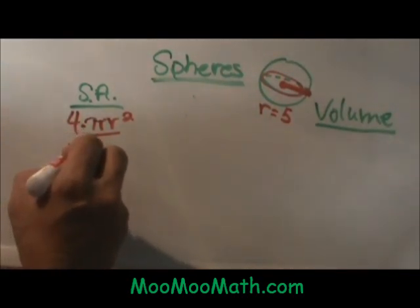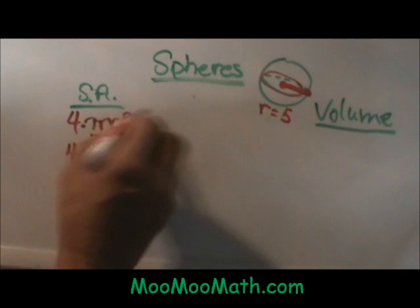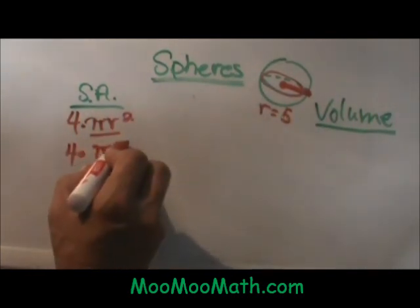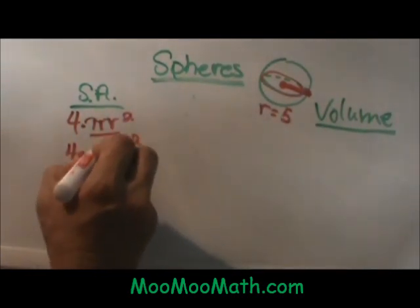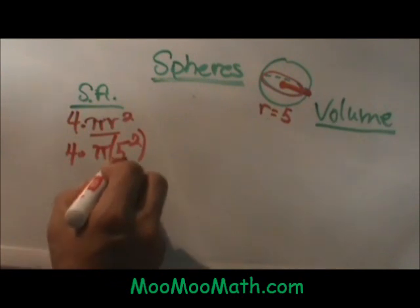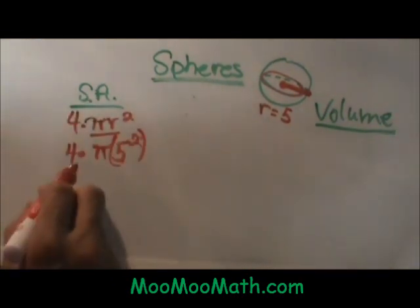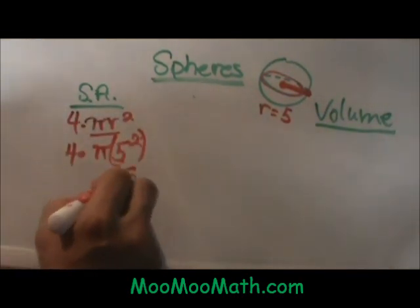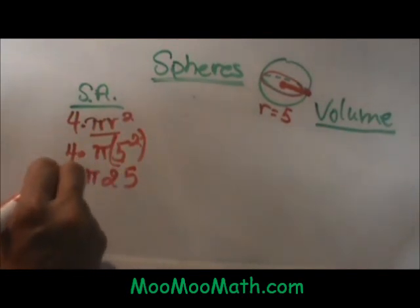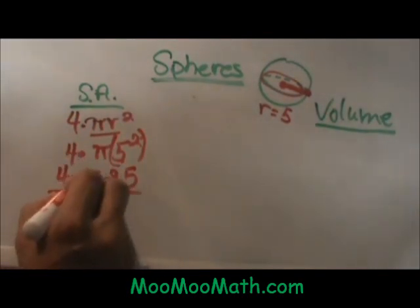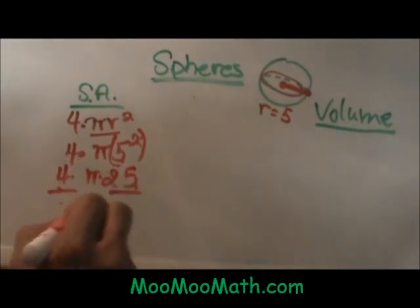Let's plug and chug here. We have 4 times pi and in this problem our radius is 5, so 5 squared. You always square first so 5 squared is 25 and 25 times 4, so you multiply 4 times 25 is 100.